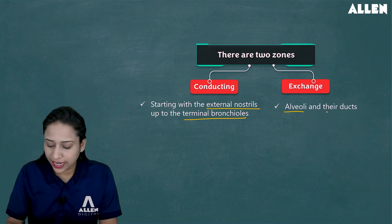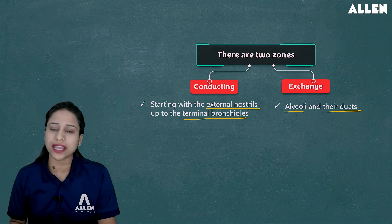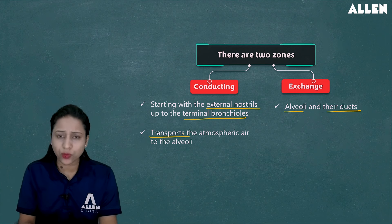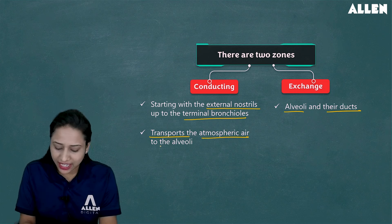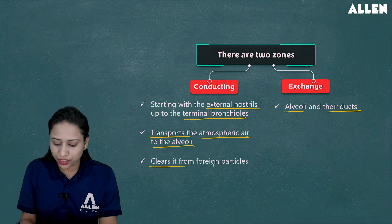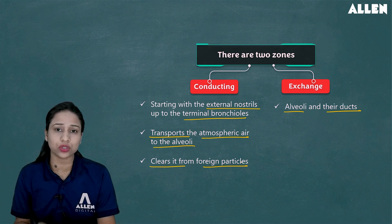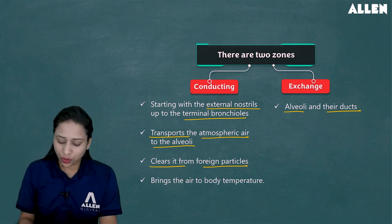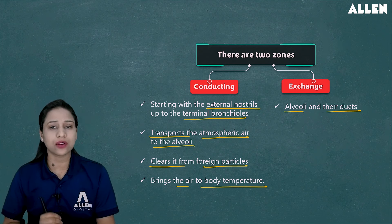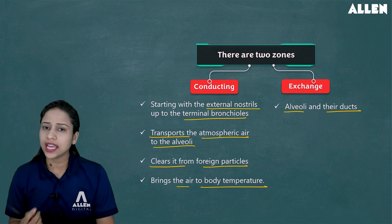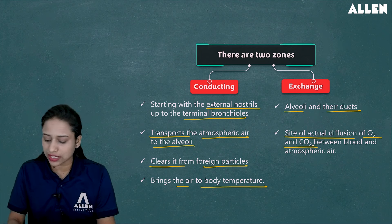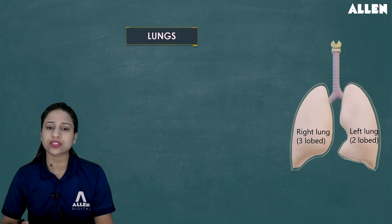The exchange zone includes the alveoli and the respiratory tree structures. The function of the conducting zone is to transport atmospheric air to the alveoli, clear inhaled air of foreign particles, and bring the air to normal body temperature. The exchange zone is the actual site of diffusion of gases — oxygen and carbon dioxide — where the safe exchange of gases takes place.